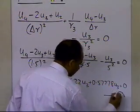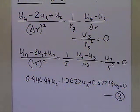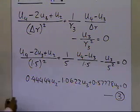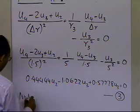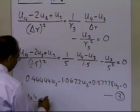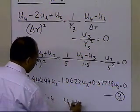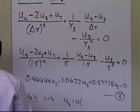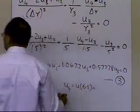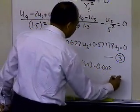I have four nodes and want to develop the profile for dependent variable u. I already have three equations, and the fourth equation will be at node 4. For node 4, I'm not writing the differential equation — instead, i equals 4 and I know that u_4 is the value of u at r=6.5, which equals 0.003. That's my fourth equation.